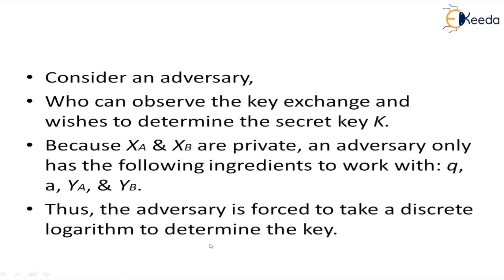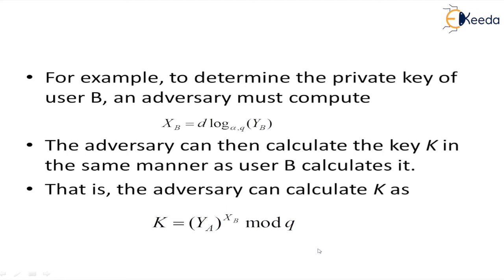Now consider the adversary. The adversary can observe the key exchange and wishes to determine the secret key. Since x_A and x_B are private, the adversary only has the following publicly available ingredients: q, alpha, y_A, and y_B. Thus the adversary is forced to use the discrete logarithm to determine the key. For example, to determine the private key of user B, the adversary must compute x_B = d_log base alpha of y_B mod q, and can then calculate k in the same manner as user B.